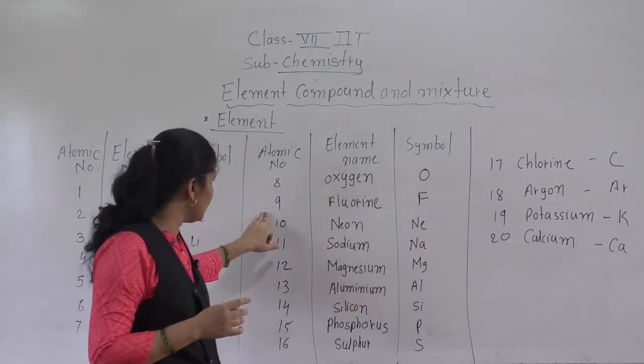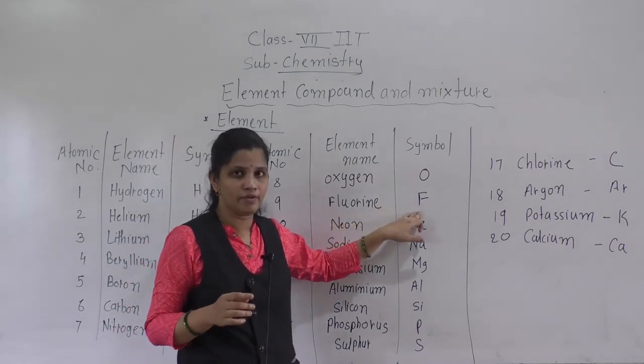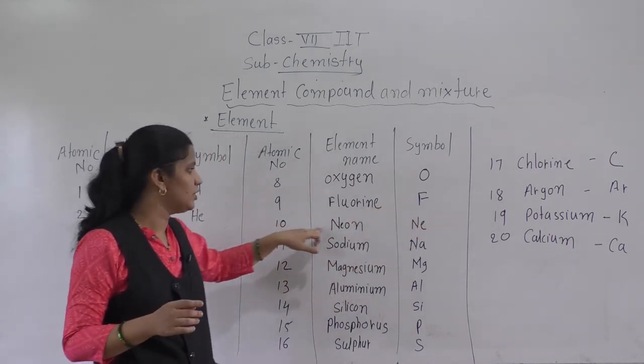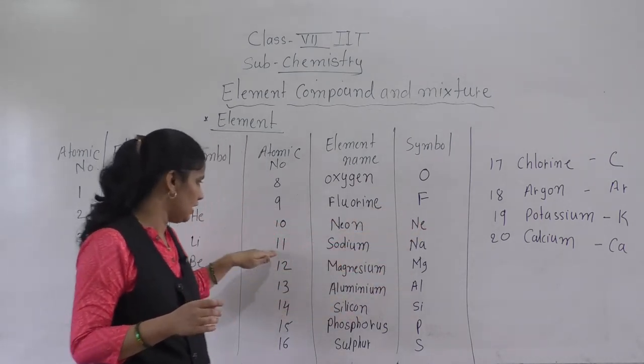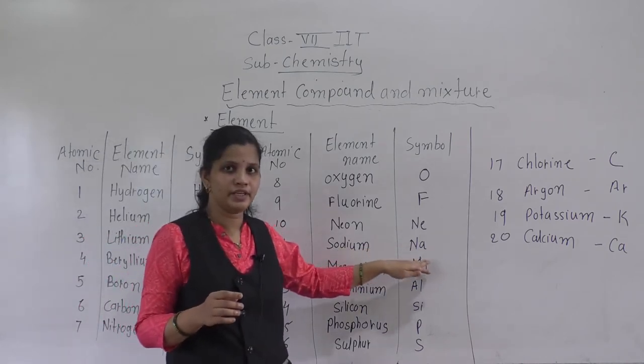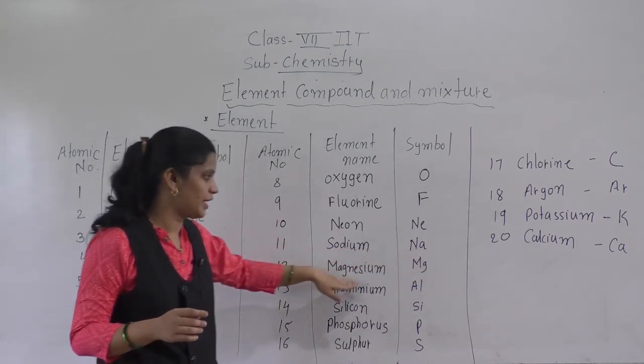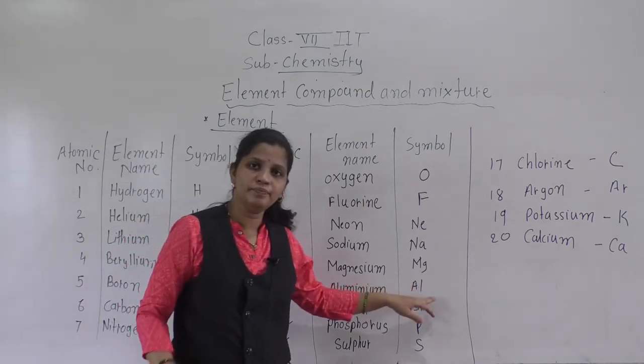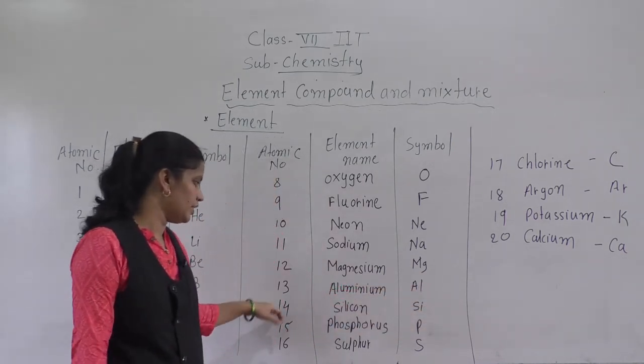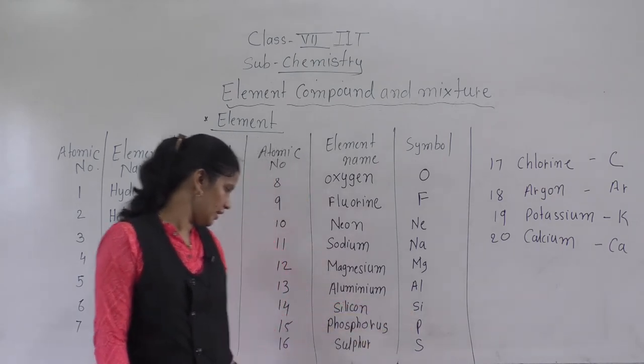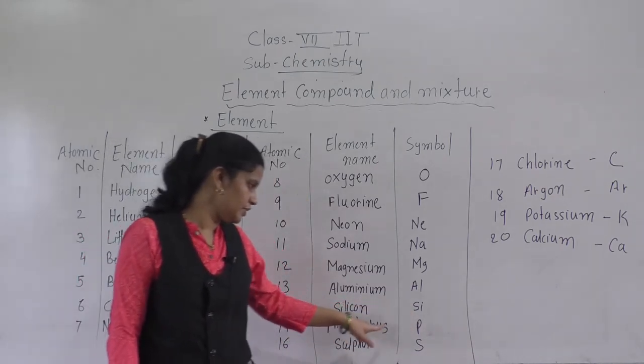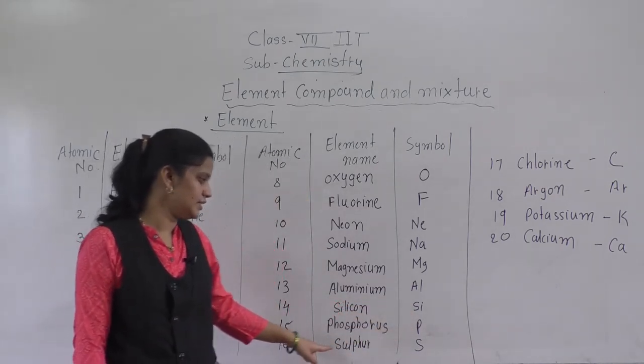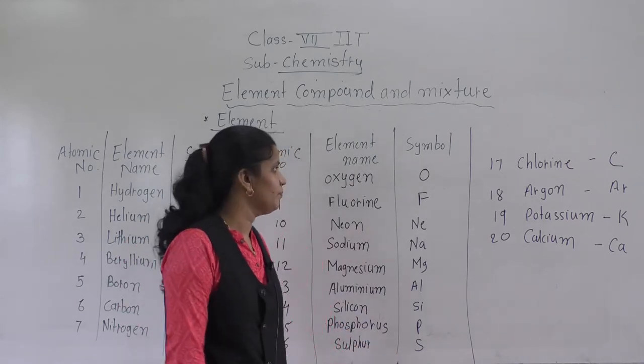Now see, 9 atomic number Fluorine F, then 10 Neon Ne, 11 Sodium Na, 12 Magnesium Mg, 13 Aluminium Al, then 14 Silicon Si, 15 Phosphorus P, and 16 Sulphur S.